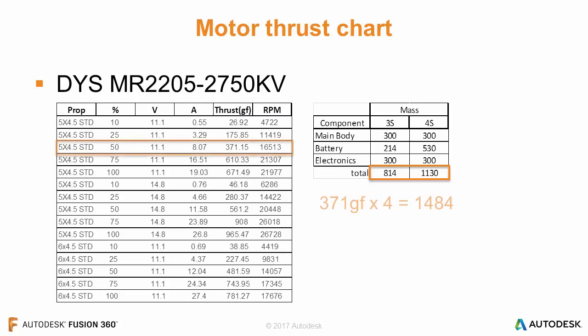Let's take a look at the example at 50% input with a five by four and a half prop on a 3-cell system. The 3-cell or 11.1-volt system will provide 371 grams of force. Times four for our quadcopter gives a total of 1484 grams. We need 814 grams bare minimum to get off the ground, and we have 1484. This is not quite the 2-to-1 ratio I'm looking for, but it is enough to get up in the air and fly.